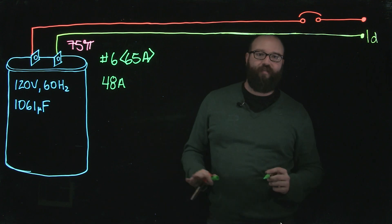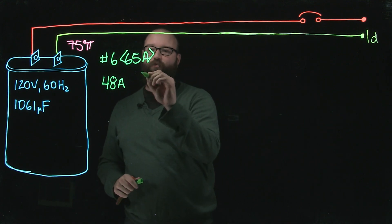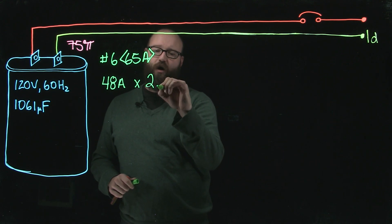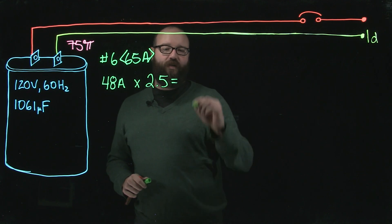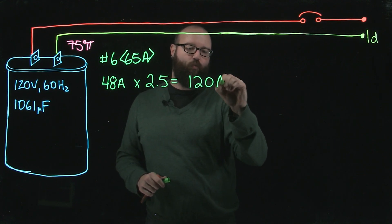So, to apply this 250 percent, we're simply going to take this 48 amps, times our 2.5 gives us 120 amps.